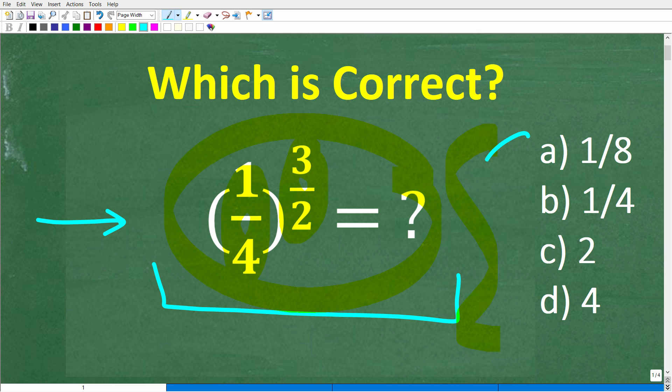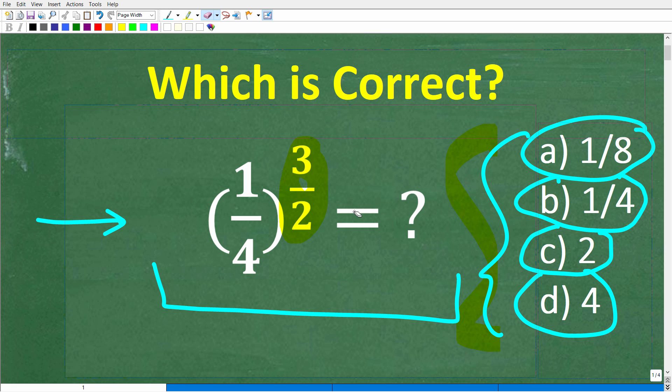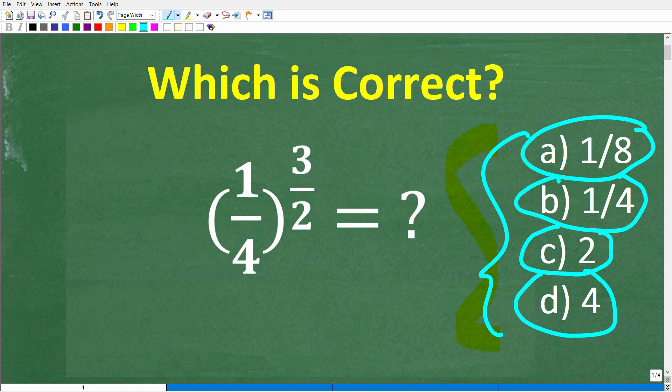So let's take a look at our choices. So A is one-eighth, B is one-fourth, C is two, and D is four. All right, so once again, no calculators. But if you can figure this out, go ahead and put your answer into the comment section. I'll show you the correct answer in just one second. Then, of course, I will walk through exactly how to solve this problem step by step.